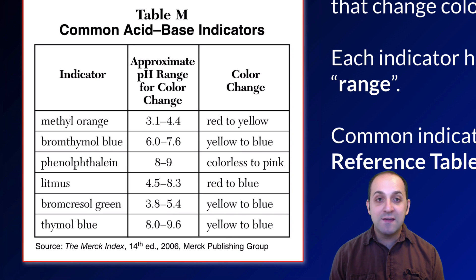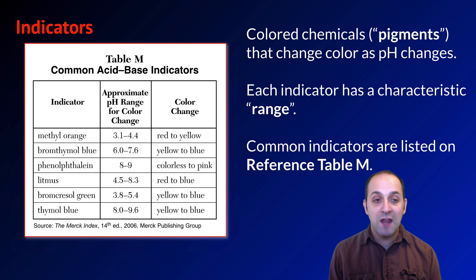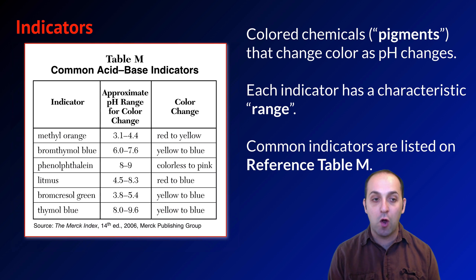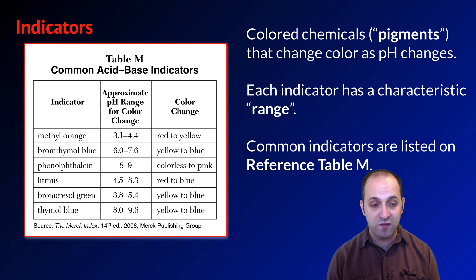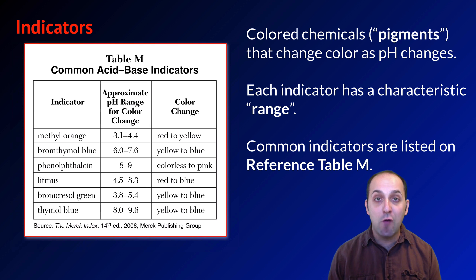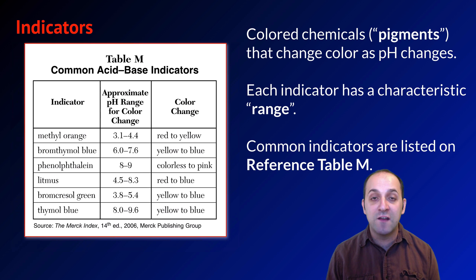You need to be familiar with the indicators listed on Reference Table M, which has six different indicators, their pH range for color change, and the colors they change to. For methyl orange, it's active from pH 3.1 to 4.4 — below 3.1 it is red, above 4.4 it is yellow, and in between it looks orange. Similarly, litmus is red below pH 4.5 and blue above pH 8.3, and inside its range it looks purple.